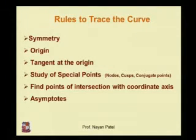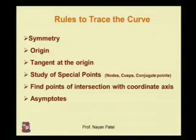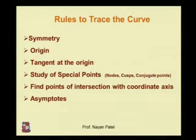These are the steps to trace the curve. First step is symmetry. Second is origin. Third is tangent at the origin. Fourth is study of special points like nodes, cusps, conjugate points, etc. Fifth is finding points of intersection with the coordinate axis, and finally asymptotes. Using these steps we can trace the curves.